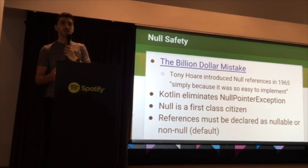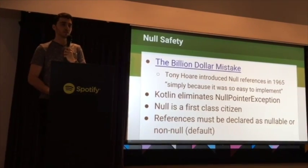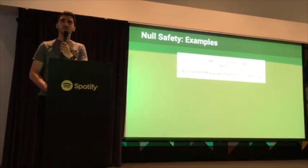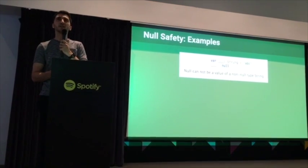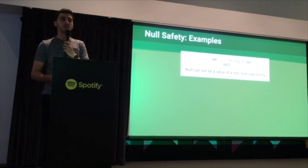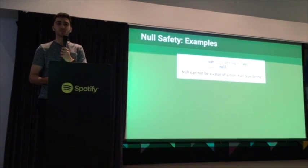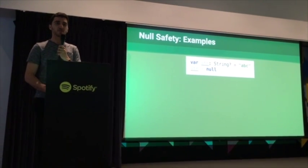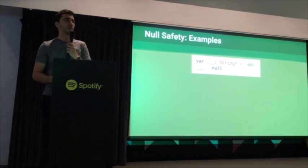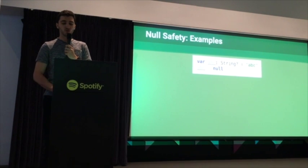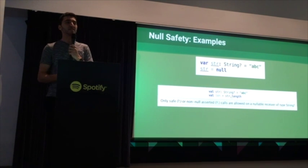When you try to use the object, the compiler enforces you to check it for null. For example, when you create a new string variable, by default everything is non-null. So when you try to set the string to null, the compiler will error and you can't run the code. If you did want to set the value to null, you append a question mark to the type definition. Once you have a nullable variable, the compiler requires you to check that field for null before you access it.